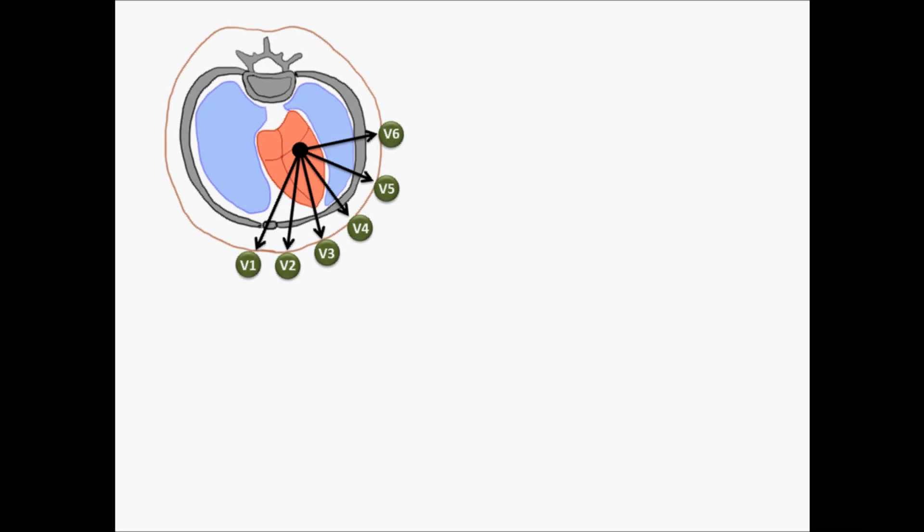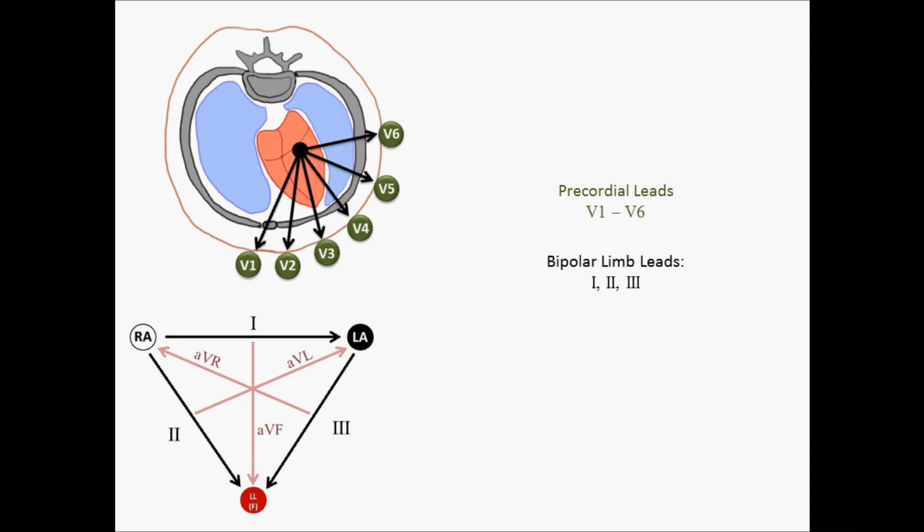So now we can take everything that we've learned and put it all together. Remember, in the transverse plane, we have our precordial leads, V1 through V6. And in the coronal plane, we have our limb leads, the bipolar limb leads, 1, 2, and 3. And the unipolar limb leads, AVR, AVL, and AVF.